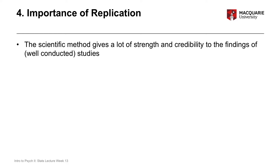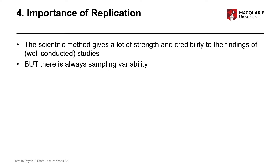If you conduct an individual study well, follow the scientific method rigorously, have good research design, and apply gold-standard principles, you should have a lot of faith in your findings. But any perfectly designed study can never overcome sampling variability — there's always the possibility that an individual study might be very different to what's really going on at a population level, through no fault of your own. It might just be that the sample of people you get are unusual and give you very different results.